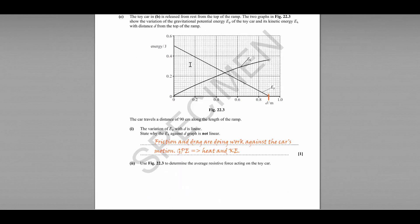CII asks us to determine the average resistive force acting on the toy car. Now to do this, we need to work out the difference between the energy that the car has at the start, the potential energy, and the energy that the car has at the end, the kinetic energy. So the potential energy here is 0.5 joules.